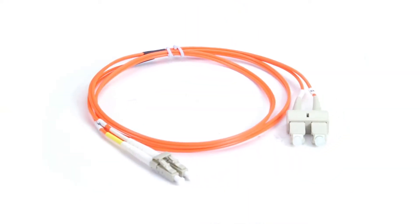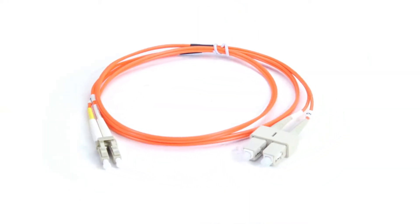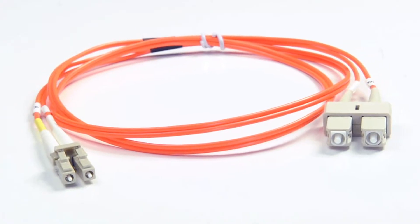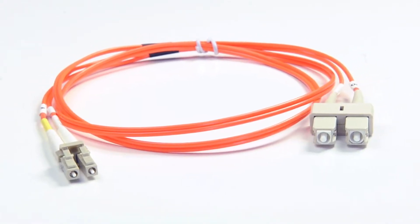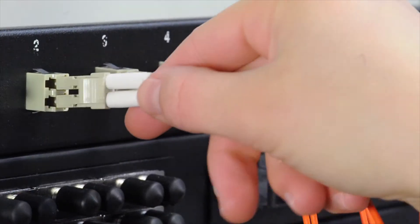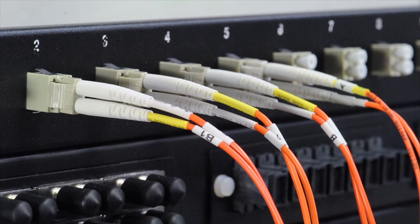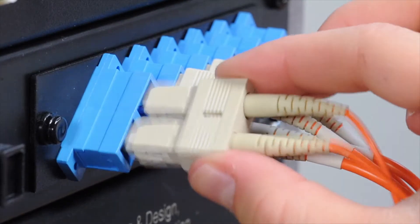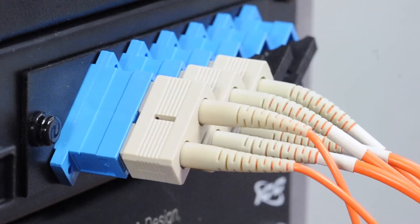This is an LC to SC multi-mode duplex fiber cable. It features two LC connectors on one end and two SC connectors on the other end. An LC connector has a small form factor design with a multi-plug casing that has a push and pull locking system. An SC connector is just a larger version of an LC connector.